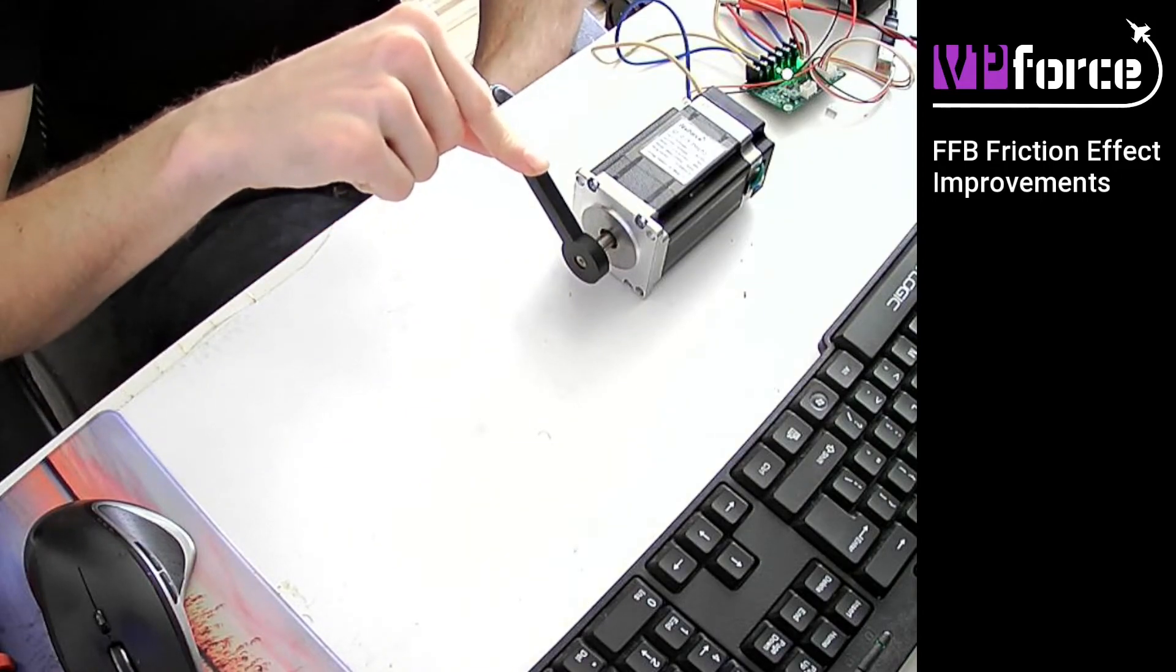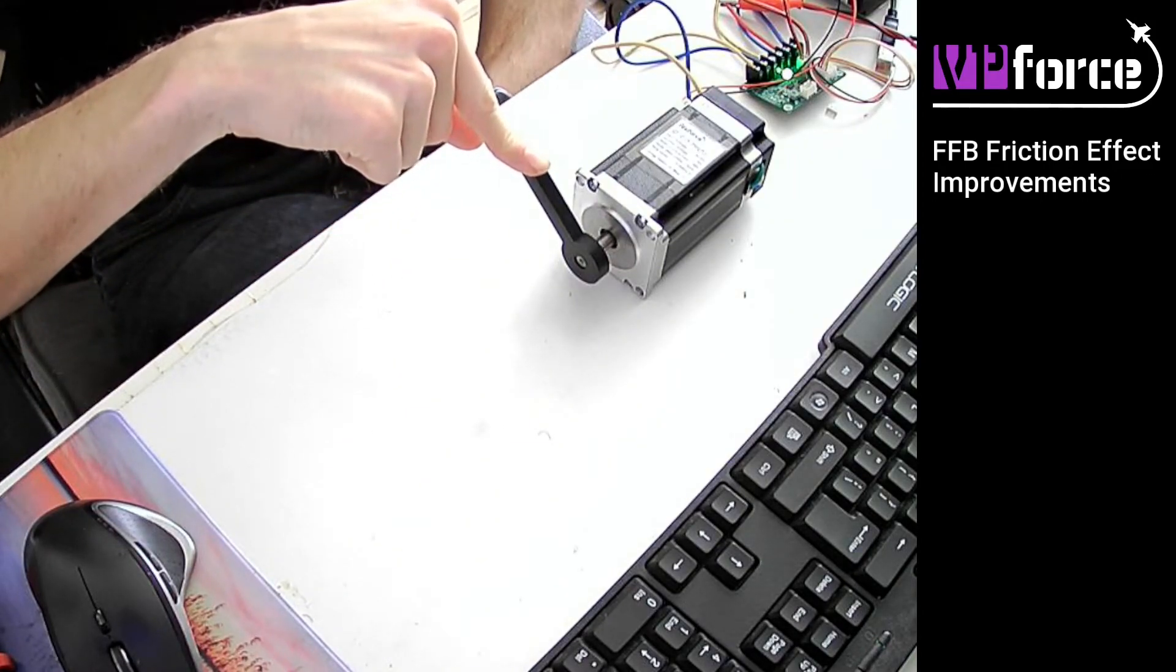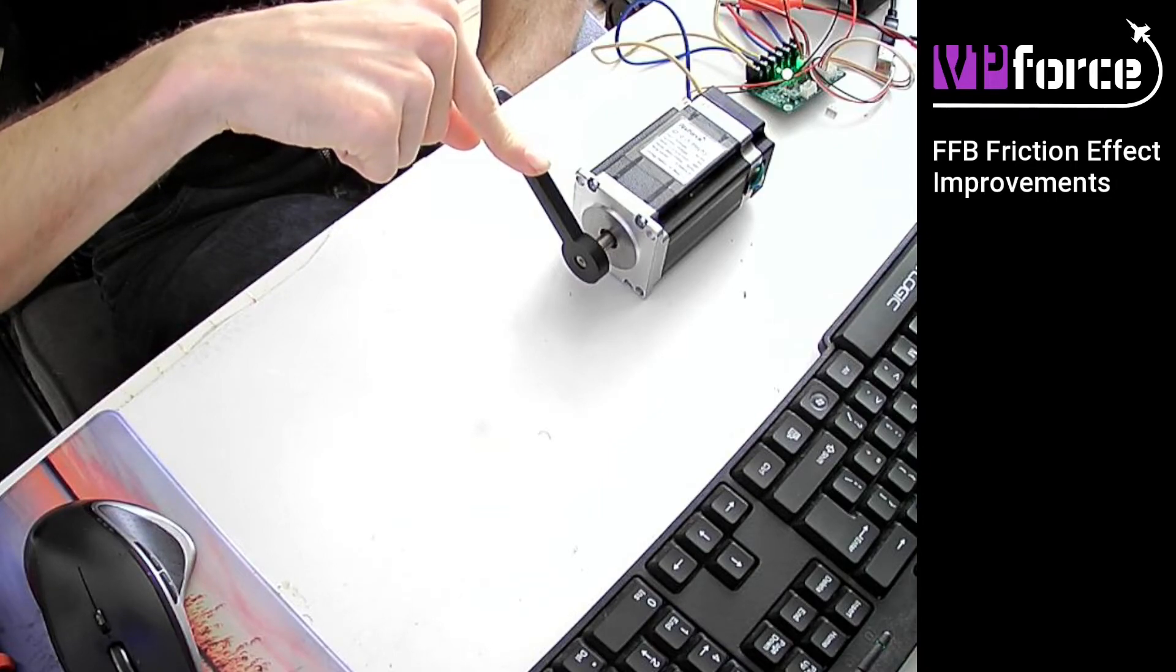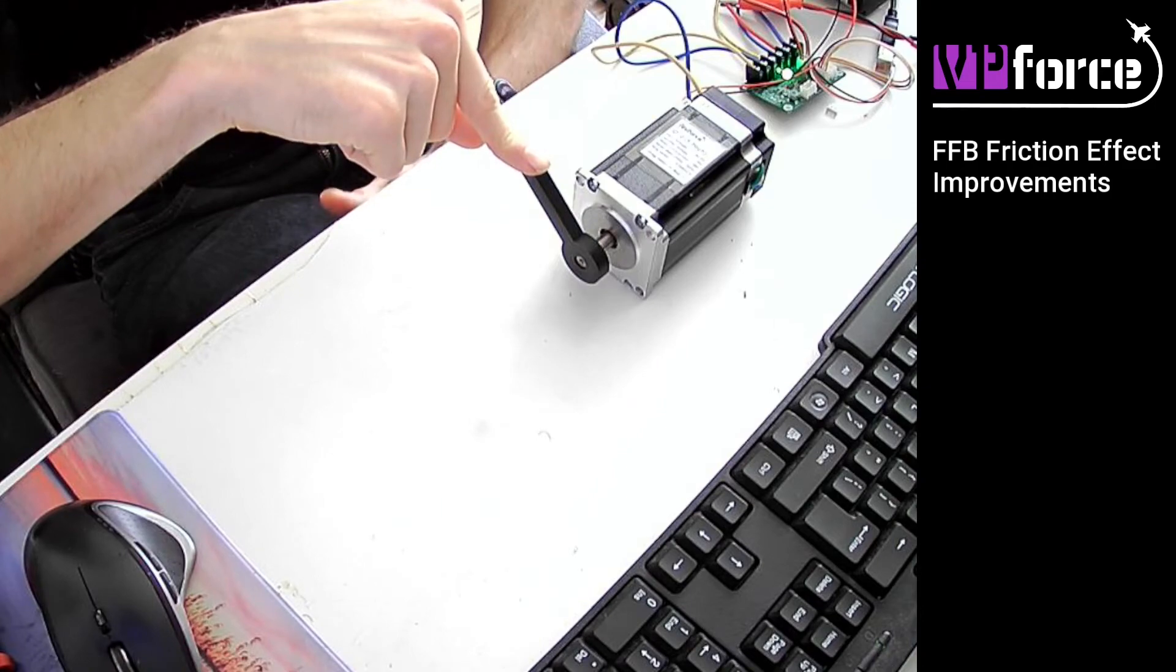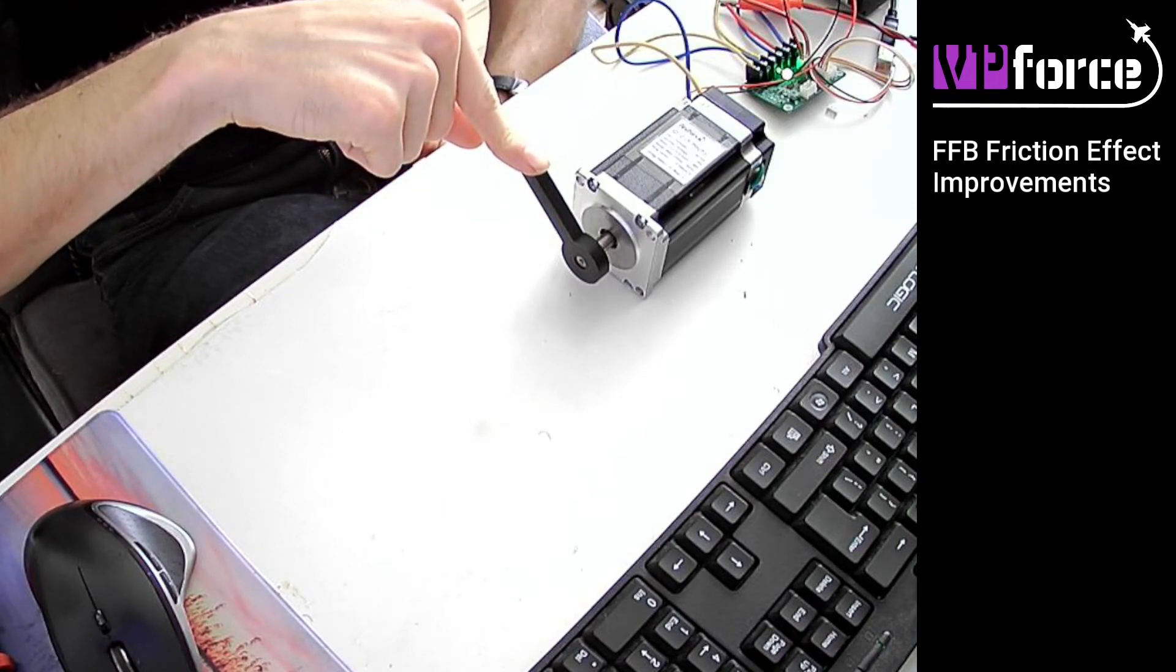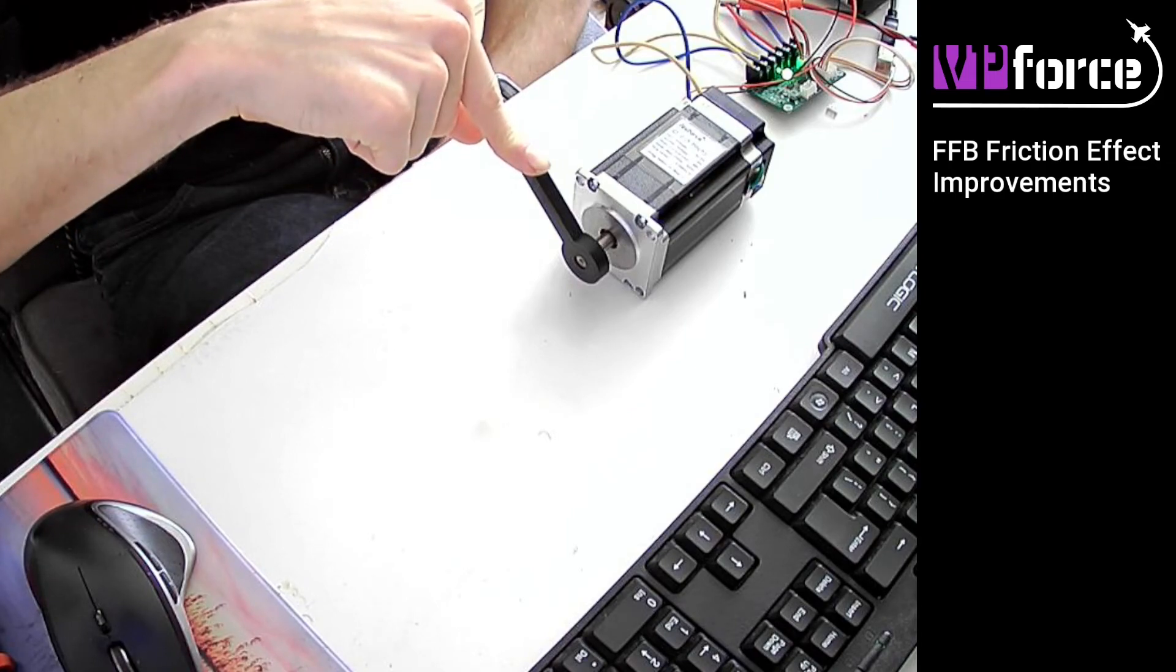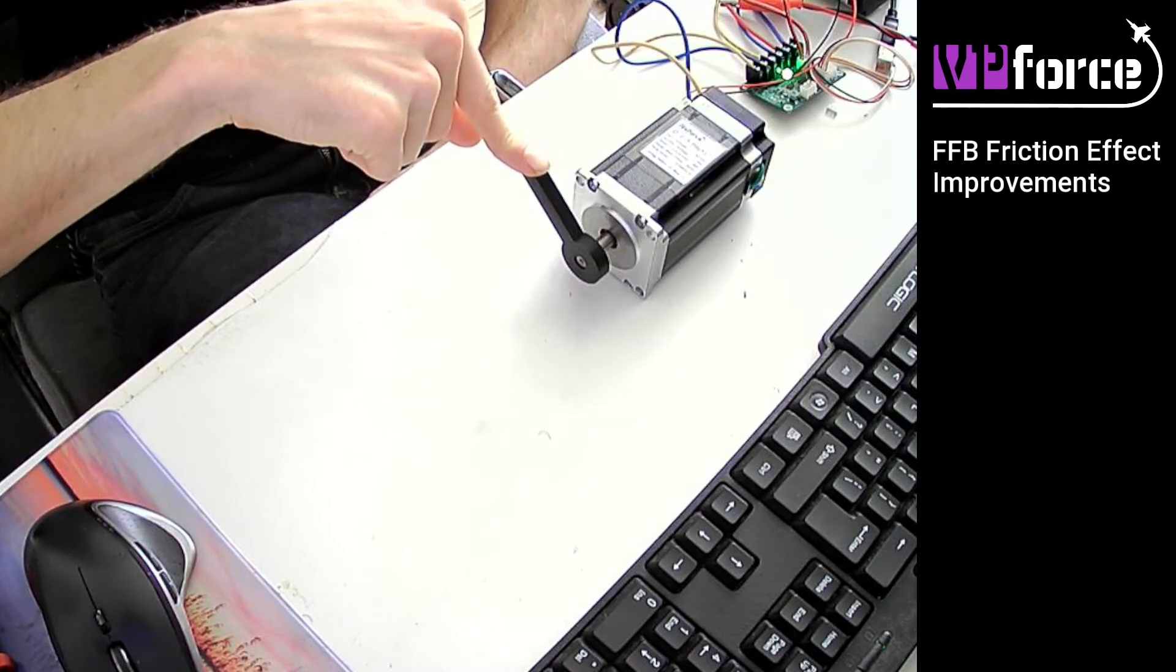This solution is great for, for example, building a collective to simulate the damper and friction. And if you put collective weight, I mean the weight from the collective, the handle, it should stay in one place over time.